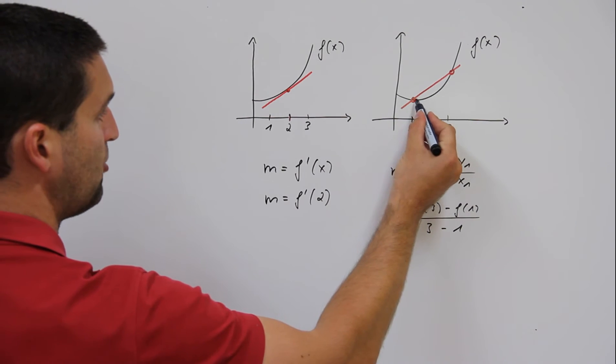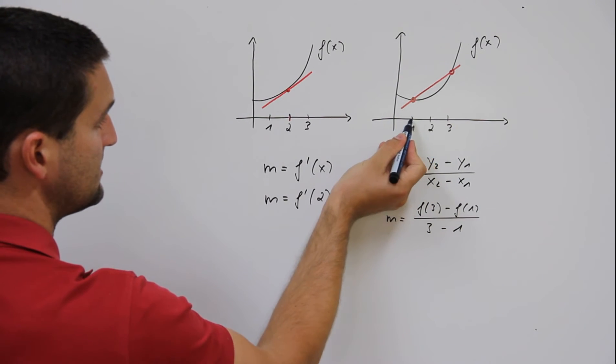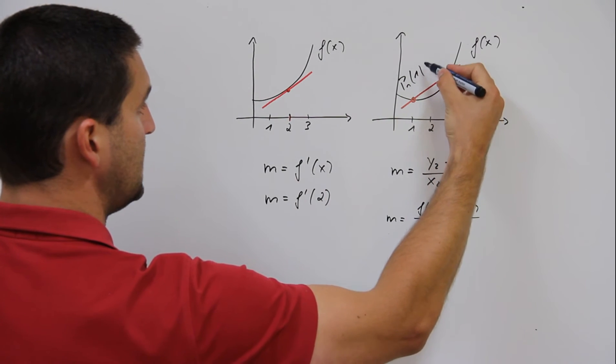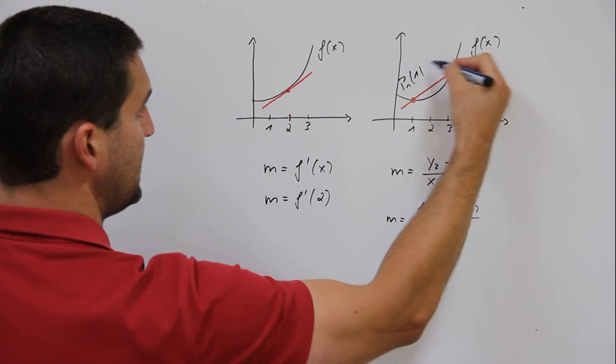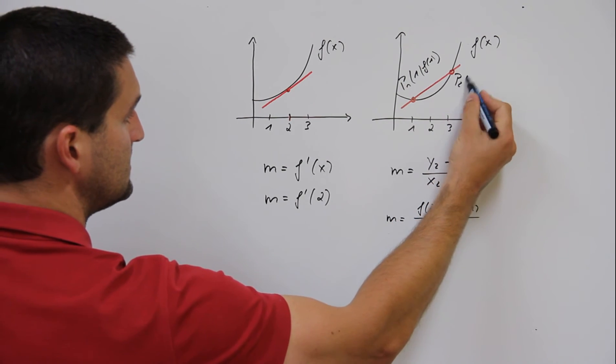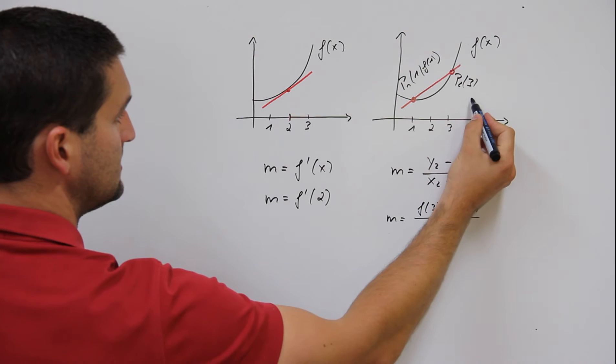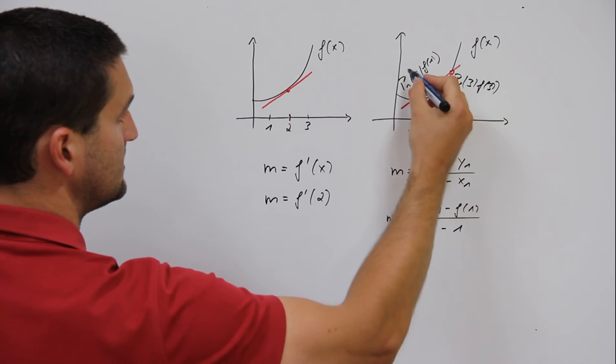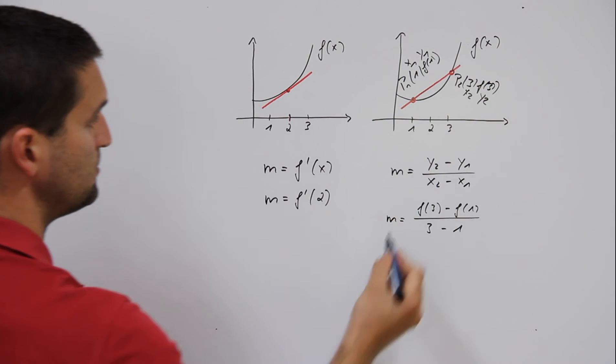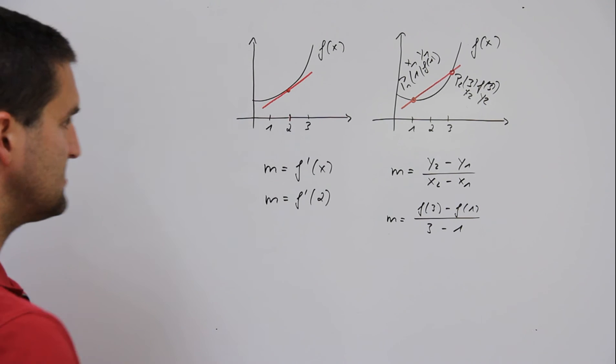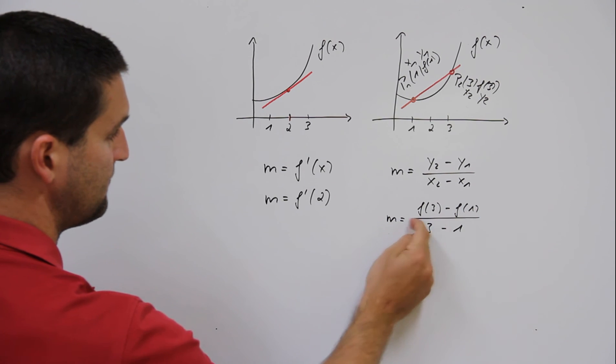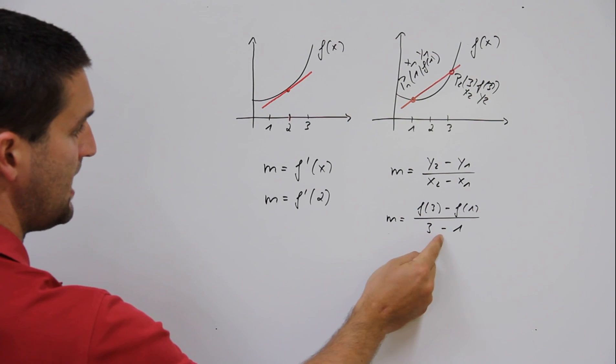The first point 1 and f prime of 1. P1 is 1, plug in 1 in f prime of x, f prime of 1. The second point 3 and f prime of 3. x1 y1, x2 y2. The only thing you have to do now is plug in f prime of 3 minus f prime of 1 divided by 3 minus 1 and that's it.